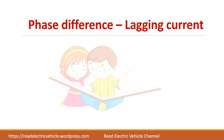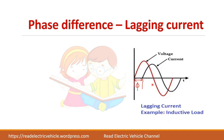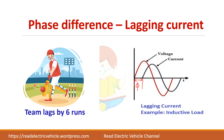Next we will see the term lagging. In this waveform, the voltage has started at zero whereas the current is starting at some other point. It means that after an angle phi, the current has started. So we call it as current is lagging the voltage by an angle phi. In sports we use this word lag — for example, a team lags by 6 runs, meaning they are coming behind. Similarly here, the current lags the voltage by an angle phi.